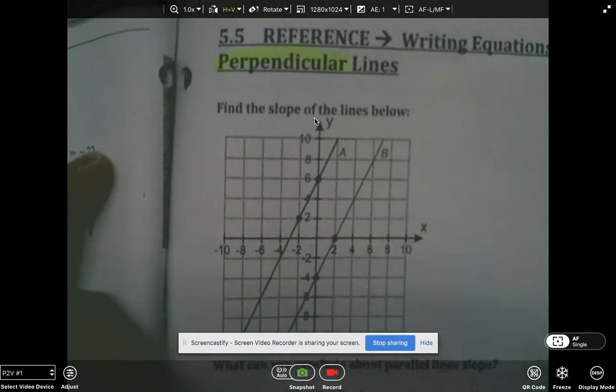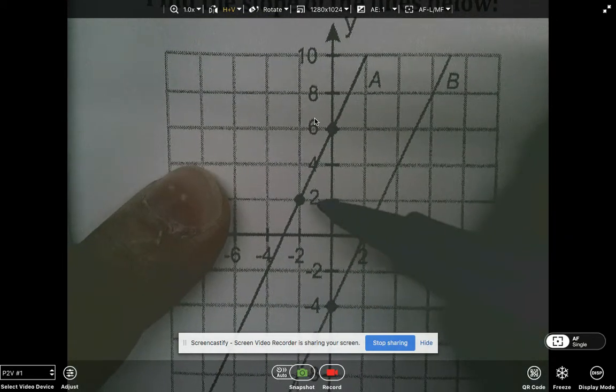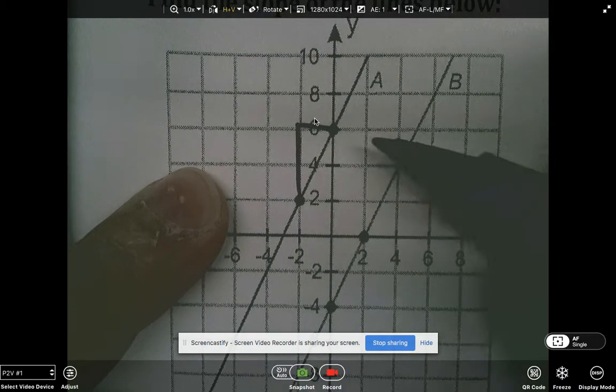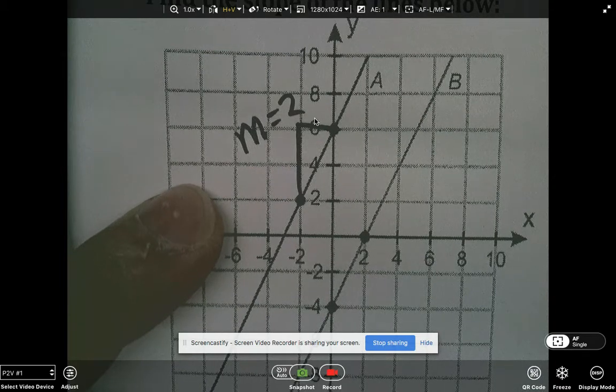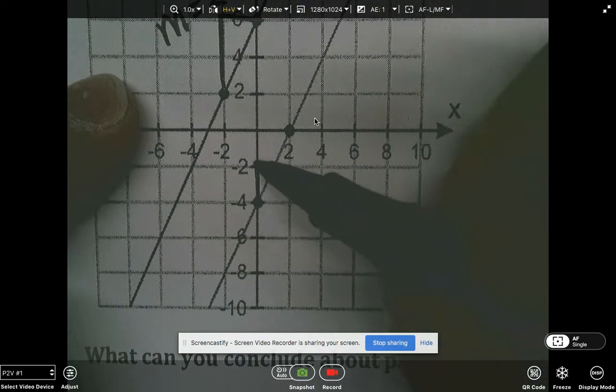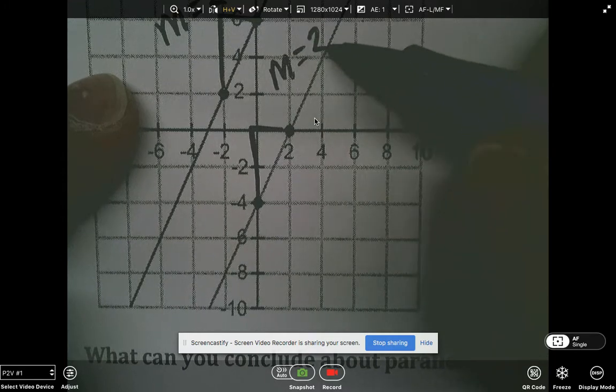So can someone raise your hand? If we're just focusing on line A, what is the slope here? So m equals 2. And how about line B? Also equals 2.